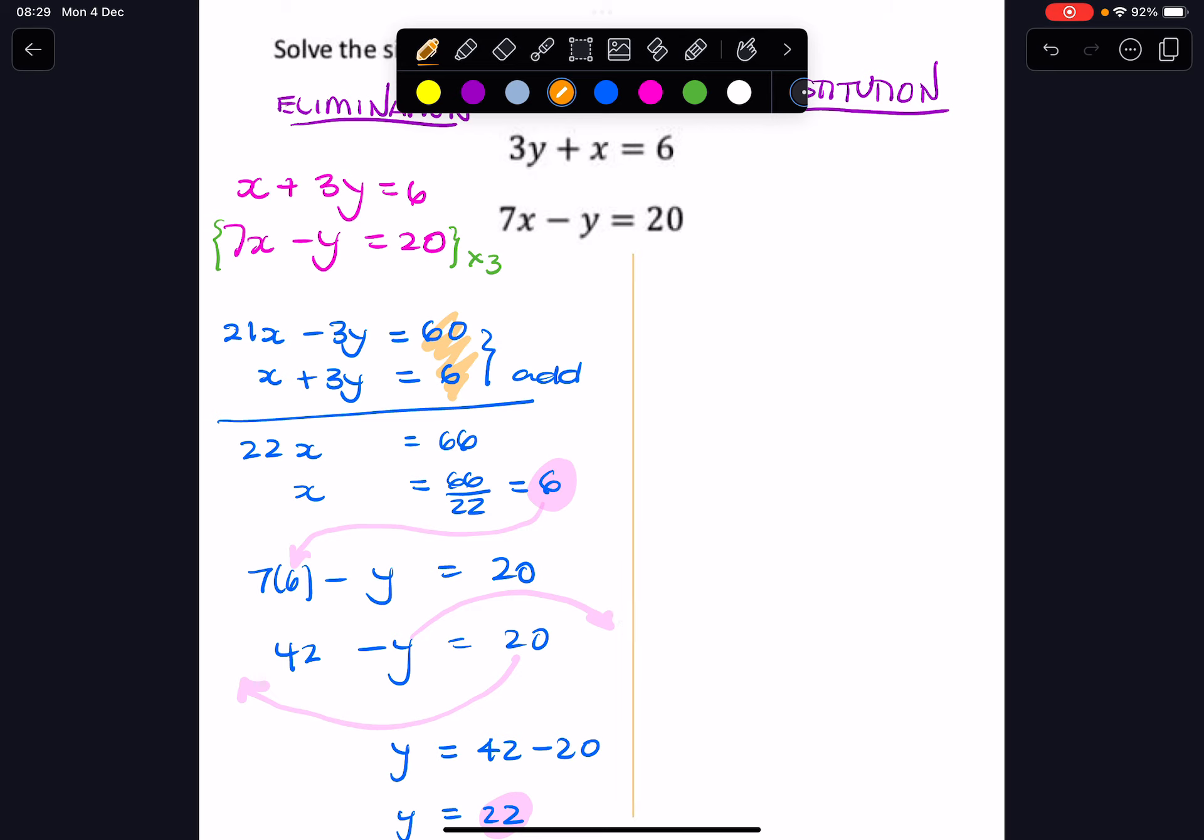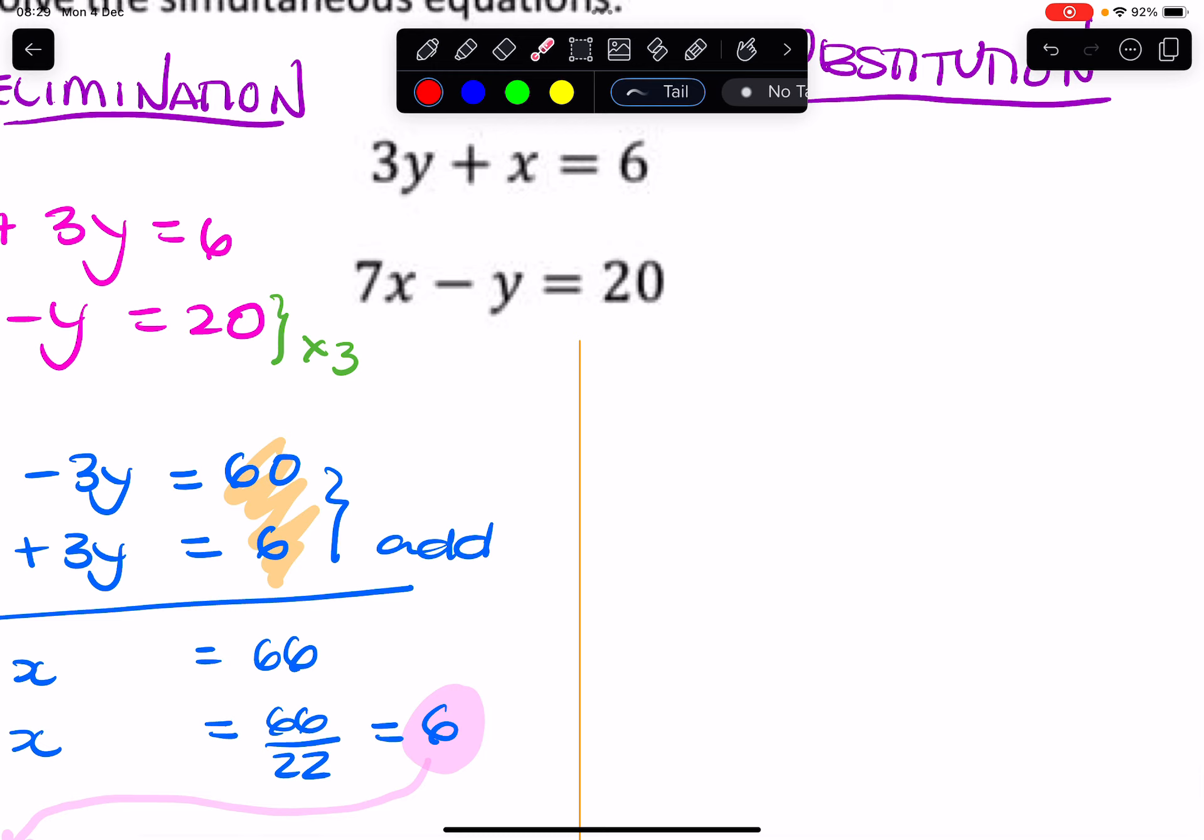Okay, so substitution. What you want to do is you want to rewrite one of the equations in the form x equals or y equals. So how about I take this equation and rewrite it so that I have y equals. So if I bring y to the right side and the 20 to the left side, I'll have y equals 7x minus 20.